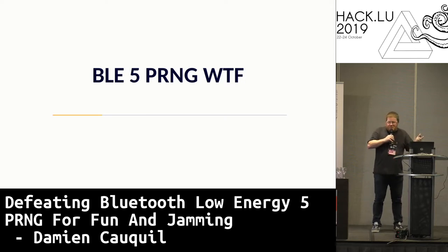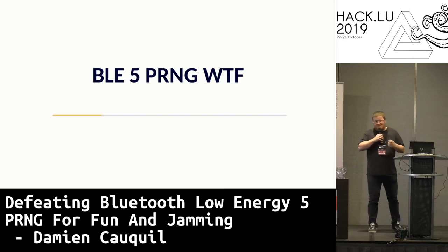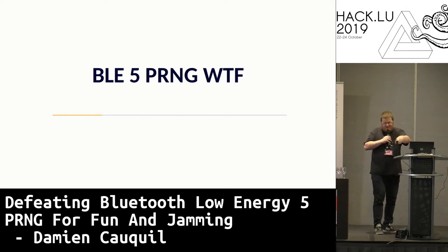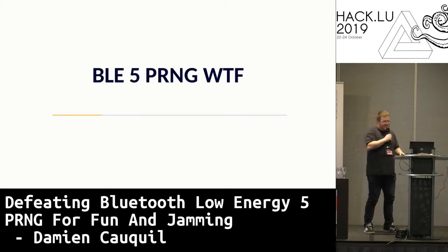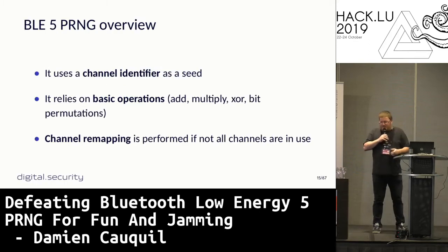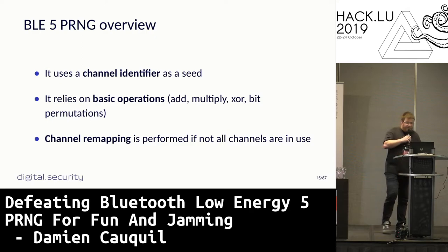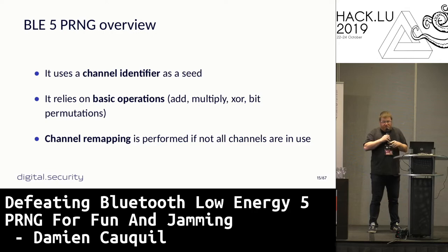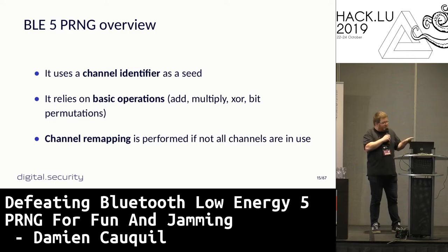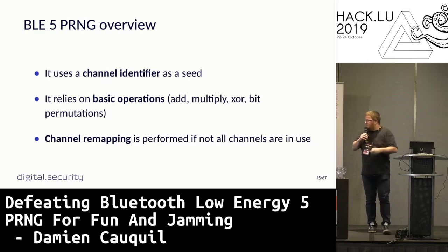Let's have a look at this BLE 5 PRNG. A colleague challenged me on this PRNG, saying it looked very awkward. The PRNG uses two different values. The first is what the spec calls the channel identifier — a value used as a seed to the random number generator. This PRNG relies on basic operations: additions, multiplications, XOR, and some bit permutations. There is also something called channel remapping, which may have some impact if you want to attack this PRNG.